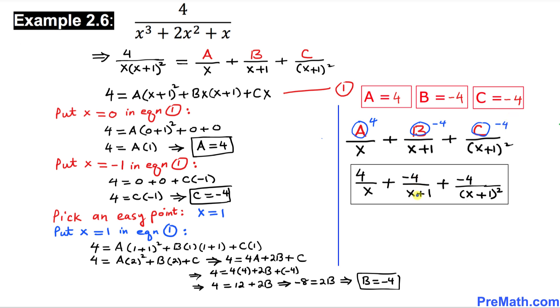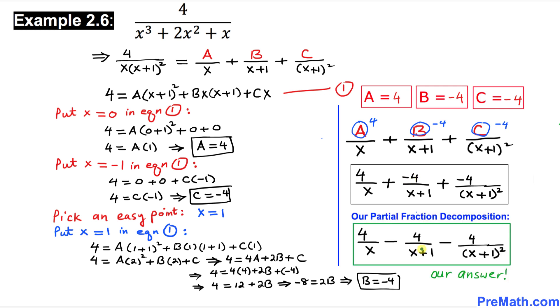So our values are A = 4, B = -4, and C = -4. The partial fraction decomposition is 4/x + (-4)/(x+1) + (-4)/(x+1)², which is our final answer. Thanks for watching, and please don't forget to subscribe to my channel for more exciting videos. Bye!